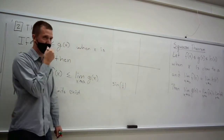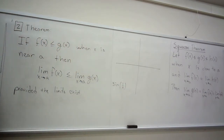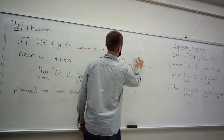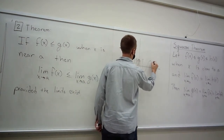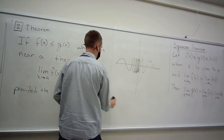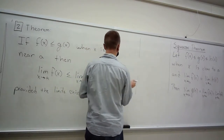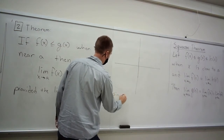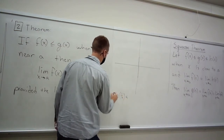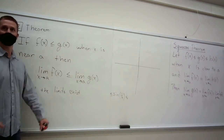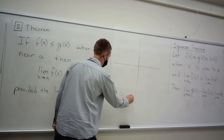We looked at this example last time. Do you remember what happened with sine of 1 over x close to 0? It just oscillated wildly — it was slow at first and then this crazy oscillation happened. Not a great function. We tried to take limits and it just didn't work. But what can you tell me about the values of sine of 1 over x? It's always between negative 1 and 1 — always definitely between negative 1 and 1.